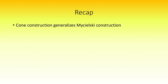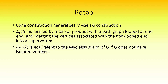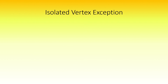To recap, the cone construction is a generalization of the Michelsky construction. To form the cone over a graph g, written as delta sub i of g, take the tensor product of g with the path graph h of length i with one end vertex having a self-loop, then merge the vertices with right entry equal to the non-looped end vertex of h. Delta sub 2 of g is equivalent to the Michelsky graph of g when g does not have isolated vertices. While the cone over a graph does not generally increase chromatic number, it does in the case of the complete graph on two vertices.